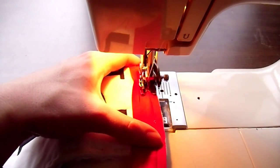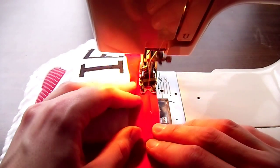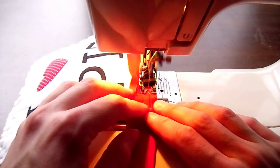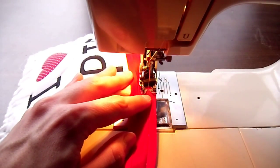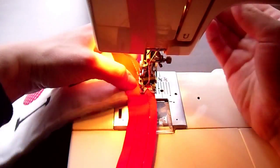Starting at the bottom of the potholder, stitch the binding, leaving about 5 inches excess. Stop about a quarter inch from the corner. Remove and cut threads.